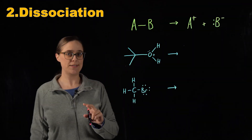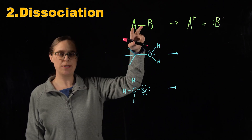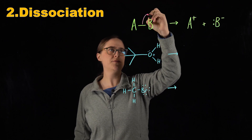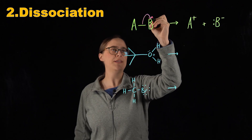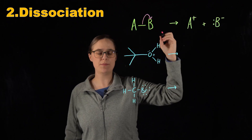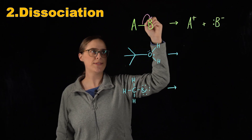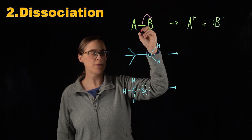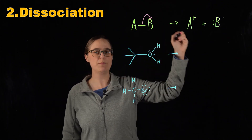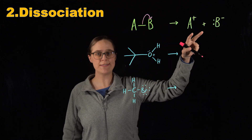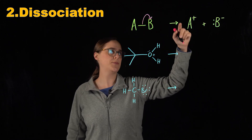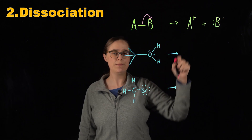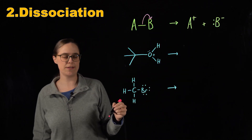Pattern number two is dissociation. We start with two atoms that are covalently bonded and electrons from that bond shift entirely to the more electronegative group — in this case, B would be something that's more electronegative. That bond breaks and you would have to consider the new charges. We end up with A plus and B minus, and B now has a lone pair of electrons on it.